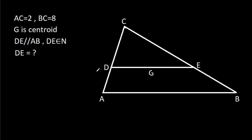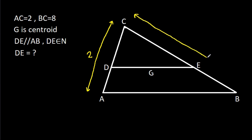In this video, we have been given that AC is 2 and BC is 8, G is the centroid of triangle, DE is parallel to AB, and DE belongs to natural numbers. We have to find DE.